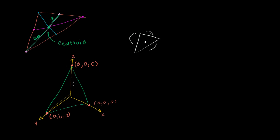The centroid of a triangle — especially in three dimensions — is just going to be the average of the coordinates of the vertices. So the x-coordinate of the centroid is 0 + 0 + a, divided by 3, which is a/3. The y-coordinate is b + 0 + 0 divided by 3, which is b/3. And the z-coordinate is c/3. So the centroid is at (a/3, b/3, c/3). That is the center of mass of this triangle, assuming uniform density.